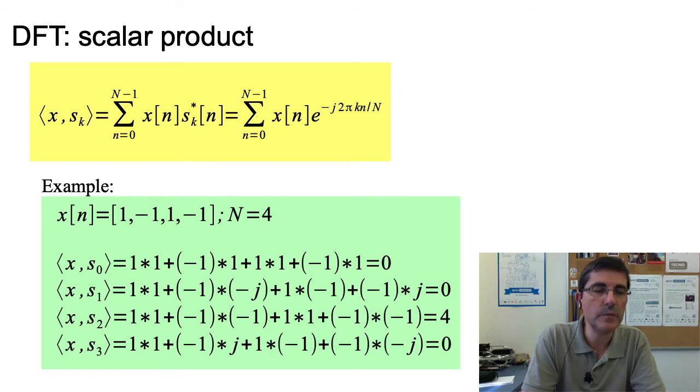and we do the scalar product of this signal by every one of the 4 sine waves that we had computed in the previous slides. We will compute the DFT result, so when we do the scalar product of X by S_0, the result will be 0. That will mean that this particular signal has no frequency 0, is not present. And then, if we change to S_1, and we do the scalar product, we get the same result 0,